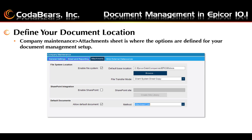Next, you define your document location in the Company Maintenance screen on the Attachment sheet. Documents can be saved on a shared server location, which is the first option. The default base location is filled in if you're going to use a shared server location. If you choose the file system option, you have a choice of two file transfer modes in the drop-down box: using a transfer service or using a client system direct copy.